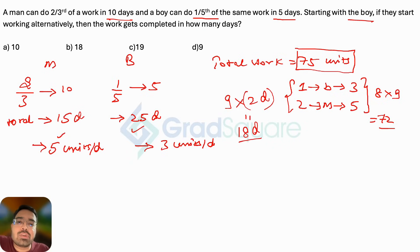If you go further you will realize on every odd day boy is working, on every even day man is working. So in 18 days you are able to finish 72 units. So on the 19th day who will be working? A boy will be working, and this boy will finish three more units. So 72 plus 3 will make it 75 units of work, and that was the total unit of work. So the work will get over in 19 days.